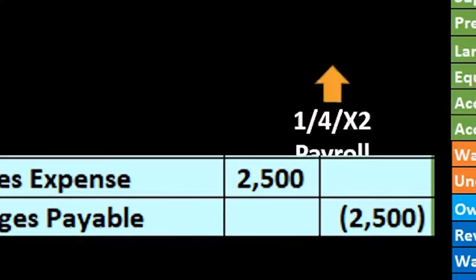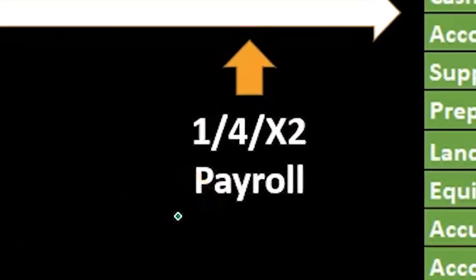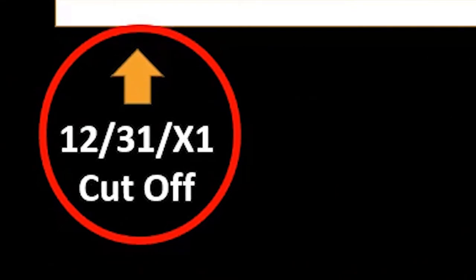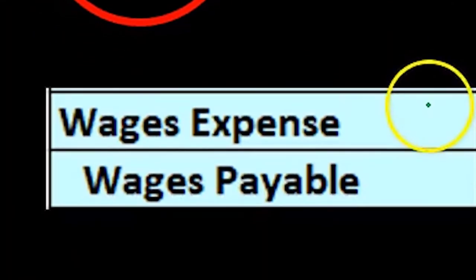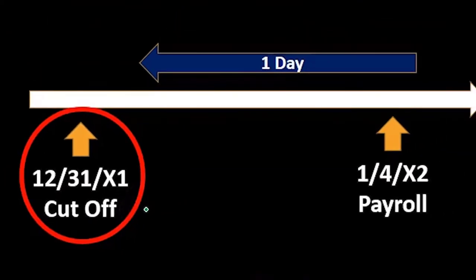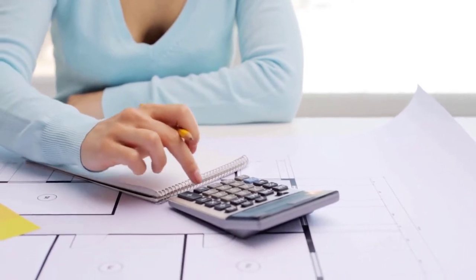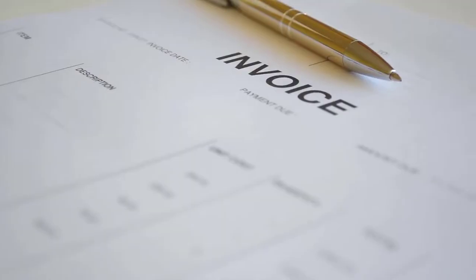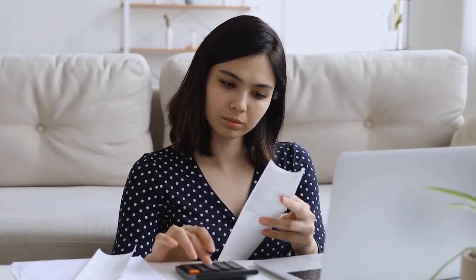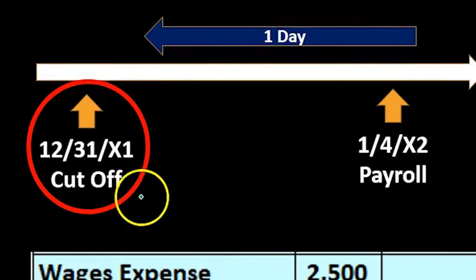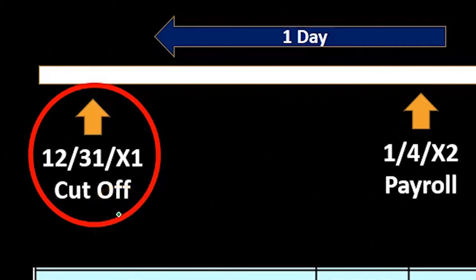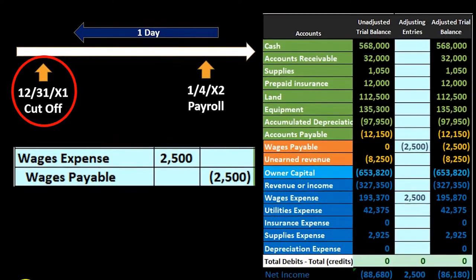Why do we have the adjusting journal entry? If the payroll happens sometime in the next time period — meaning after the cutoff date — it's very possible that a few days happen before the cutoff date, and we're going to have to adjust for that, recognizing the expense in the time period that it was earned. The adjusting process happens after the normal accounting cycle, where we have invoices, checks, and bills, then we do the adjusting process to be more on an accrual basis as of the end of the month or year, and then we do that adjusting process to make the financial statements.